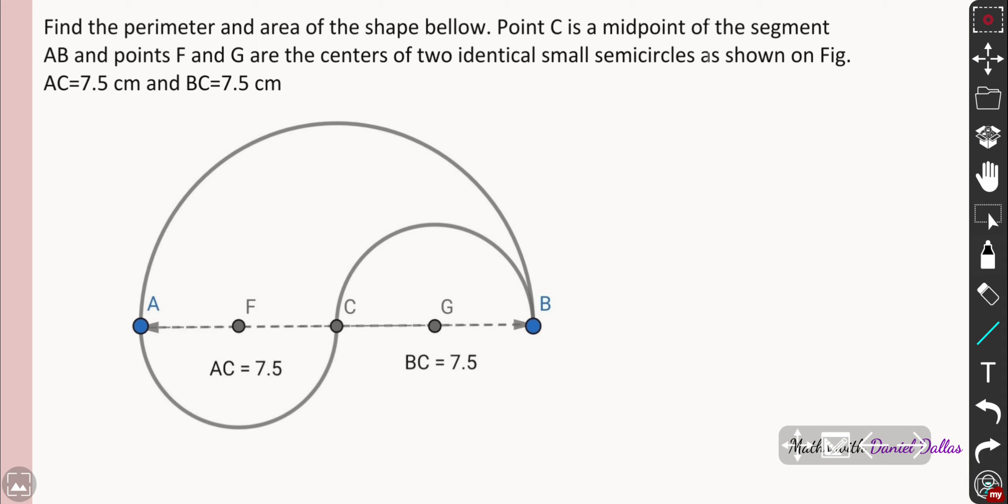Find the perimeter and the area of the shape below. That's the shape. I'm just going along the contour of that shape. Point C is the midpoint right there of the segment AB and points F and G are the centers of two identical semi-circles.